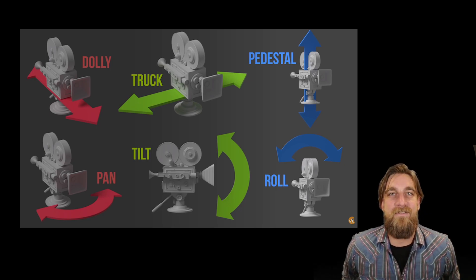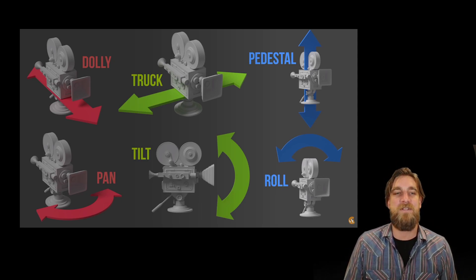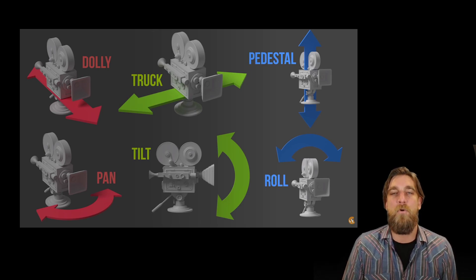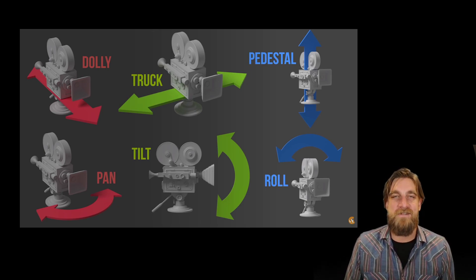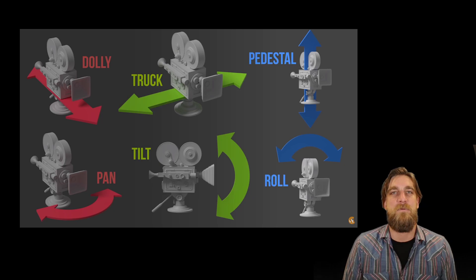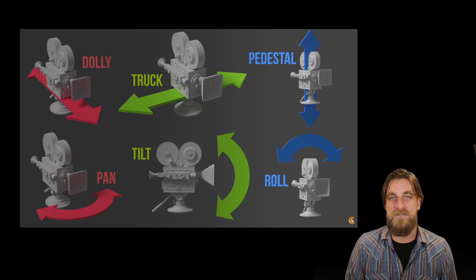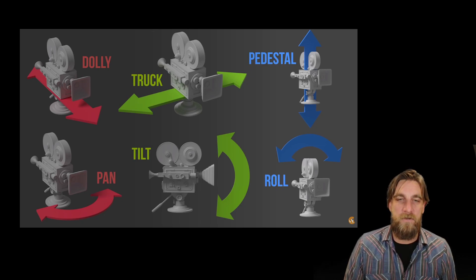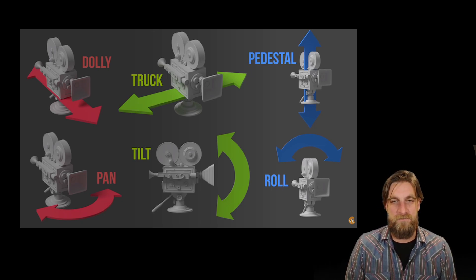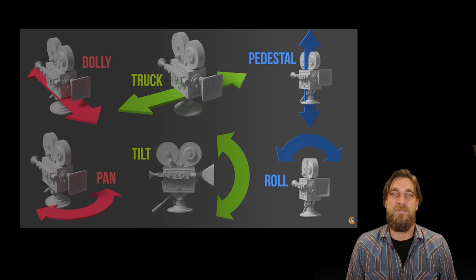A lot of times amateur filmmakers mix up the terminology and use the term panning for any sort of camera movement, but that's not technically accurate. Panning is very specifically moving from left to right or right to left — just moving horizontally. Tilt is that vertical movement: you're still in a fixed position on a tripod and you're moving the camera so it's angled downward or upward.